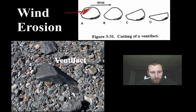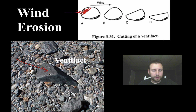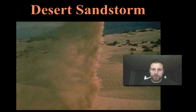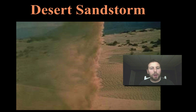We can see another ventifact example here — this is another ventifact, and it looks like the wind was probably coming from this region, creating this nice sloped-off edge. In a desert sandstorm, the same thing happens: as that wind kicks up and moves sediment, it pits out the surfaces of any larger material.